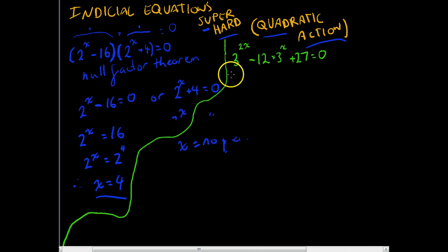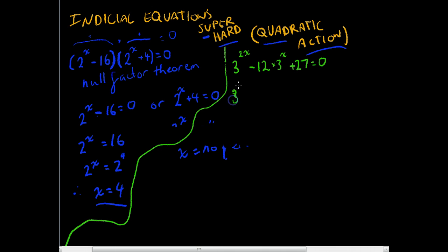3 to the power of 2x minus 12 times 3 to the power of x plus 27 equals 0. Now, it might not be immediately apparent, but this is a sort of quadratic equation. You really need to be able to recognize these. We'll look at 3 to the power of 2x and come to the realization that that is 3 to the power of x to the power of 2 minus 12 times 3 to the power of x plus 27 equals 0.